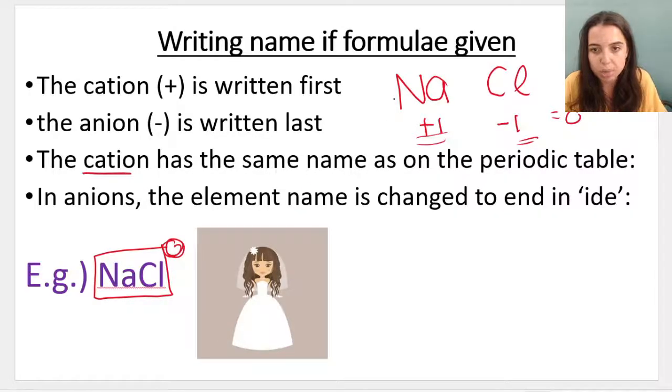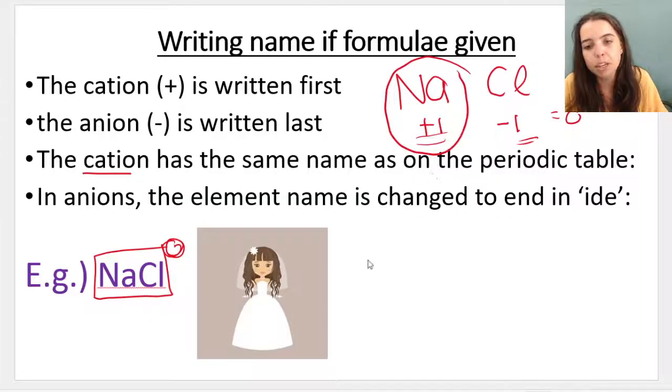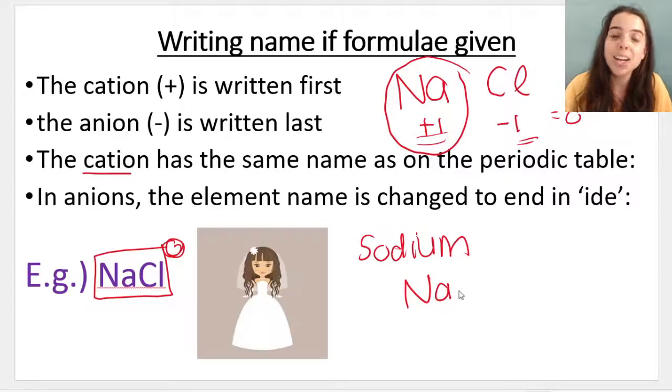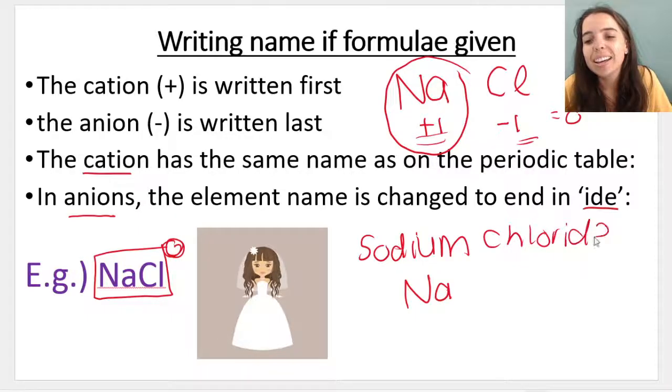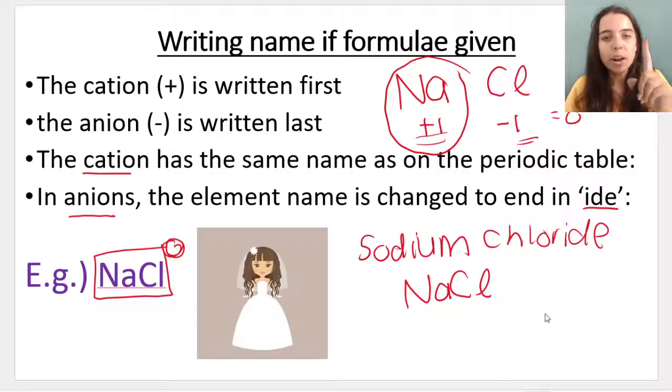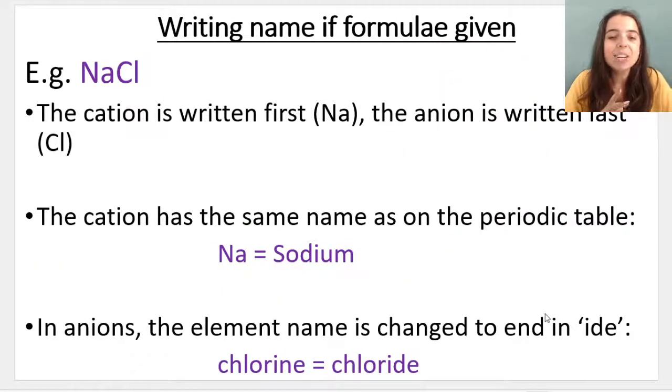The cation is sodium. The positive ion is sodium. Na comes first. The cation always comes first. Just think about it. Cats come first, rather than onions, anions. Sodium comes first. And then the anion, the element name changes to end in '-ide.' So Cl is chlorine. But when it bonds, it becomes chloride. And it forms NaCl. One sodium atom bonds with one chlorine atom, because the one gives away one electron. The one accepts one electron. Cation written first. Anion written last.